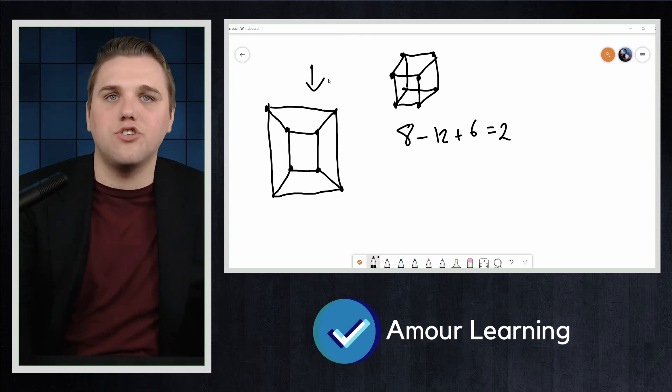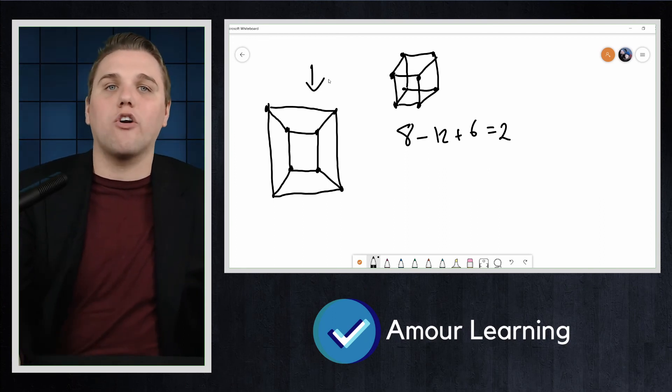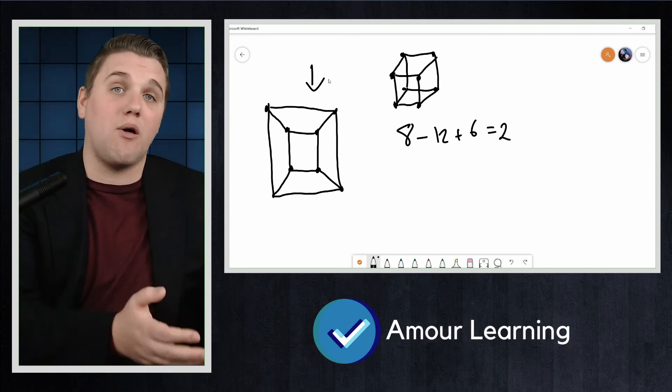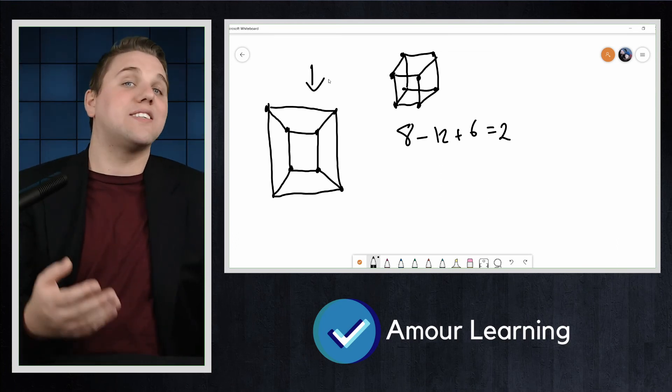Since every convex polyhedron can be represented as a planar graph, we see that Euler's formula for planar graphs also holds for convex polyhedra as well.